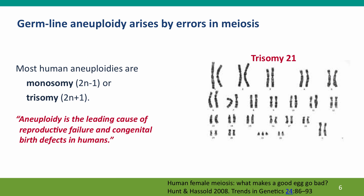Now, germline aneuploidies, unlike somatic aneuploidies, primarily arise by errors in meiosis, although they can also arise by errors in mitosis in the germline. The most common human aneuploidies are either monosomies — one chromosome is missing, so the chromosome number is 2n-1 — or they're trisomies, where there are three copies of one chromosome, so the cell has 2n+1 chromosomes. Aneuploidies are very important for human well-being because aneuploidy is the leading cause of reproductive failure, the leading cause of miscarriage, and the leading cause of congenital birth defects in humans.